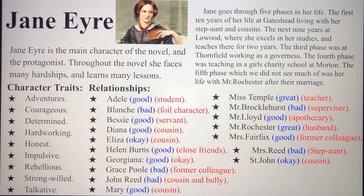Jane goes through five phases in her life: the first ten years at Gateshead living with her step-aunt and cousins; the next nine years at Lowood where she excels in her studies and teaches for two years; the third phase at Thornfield working as a governess; the fourth phase teaching in a girls' charity school at Morton; and the fifth phase — her life with Mr. Rochester after their marriage.